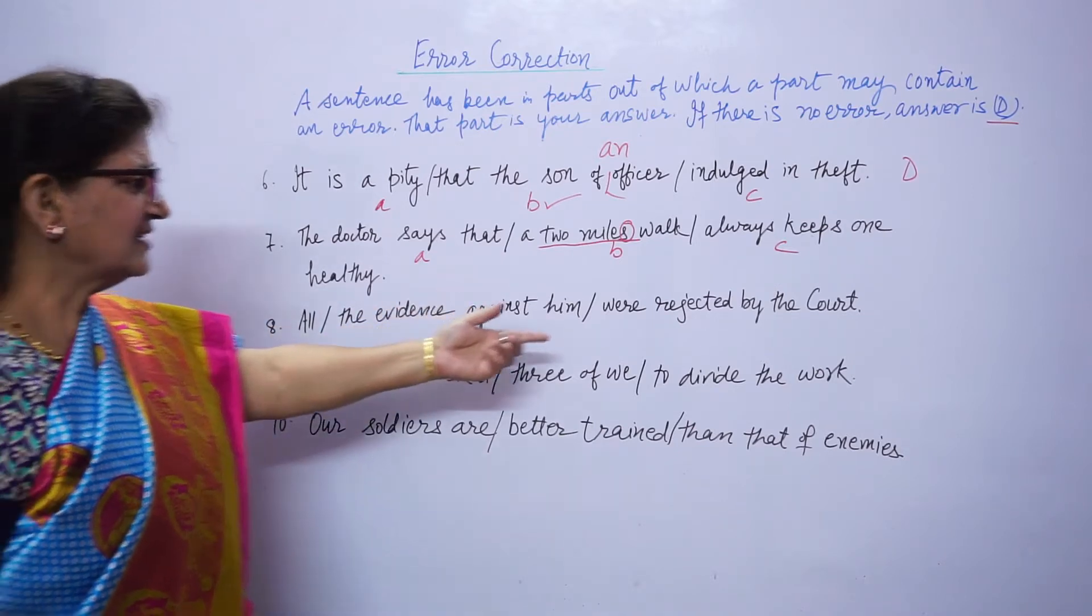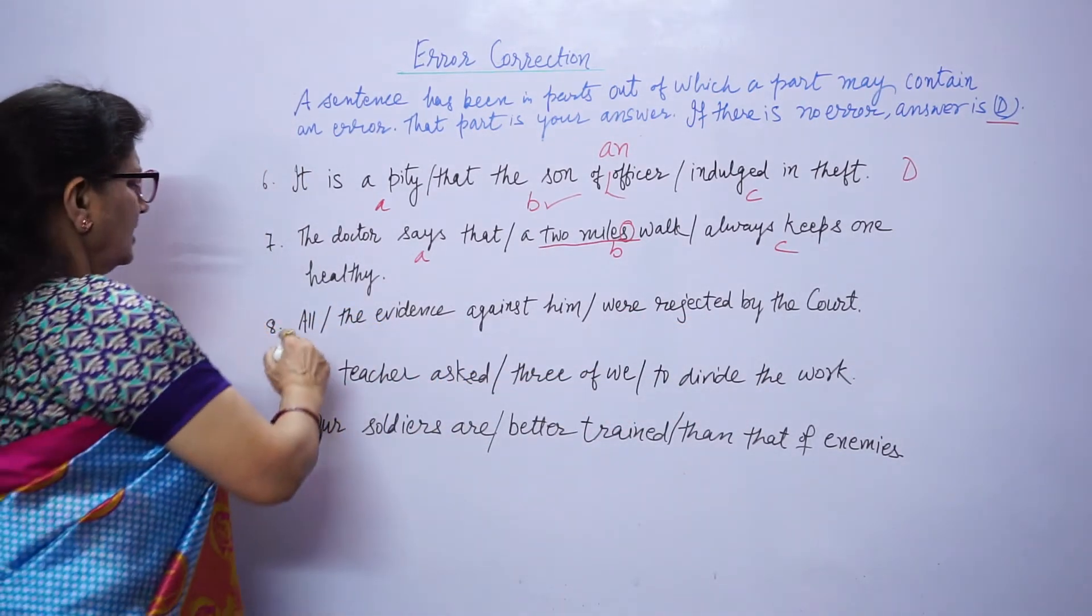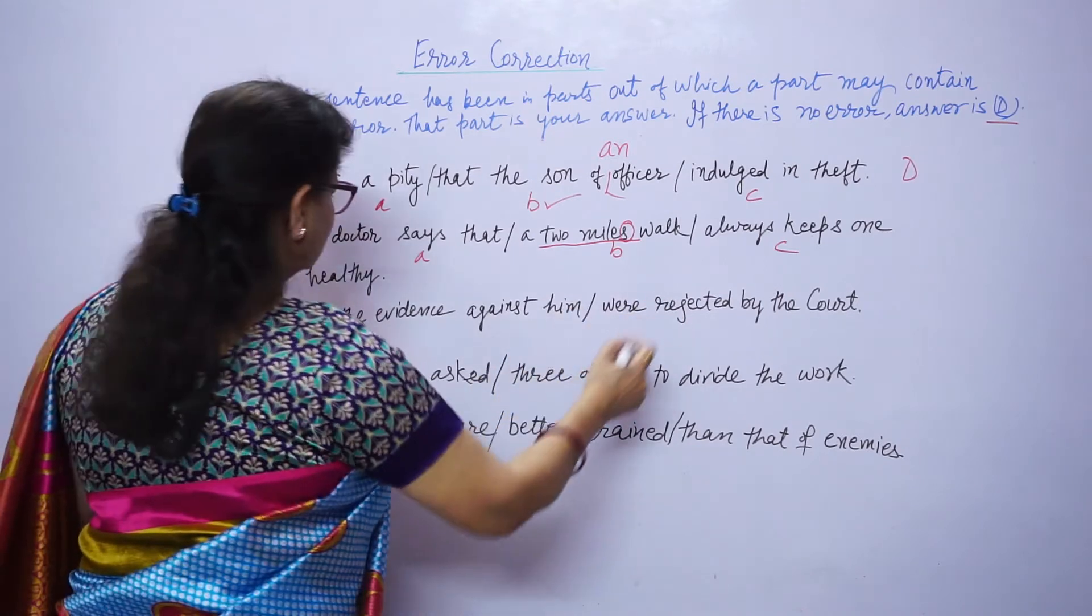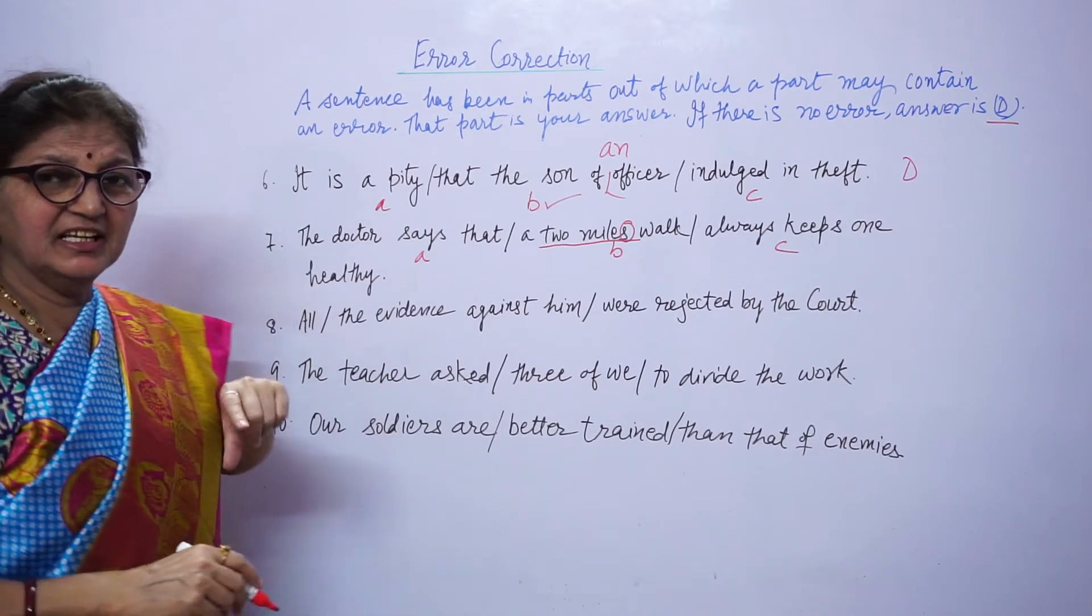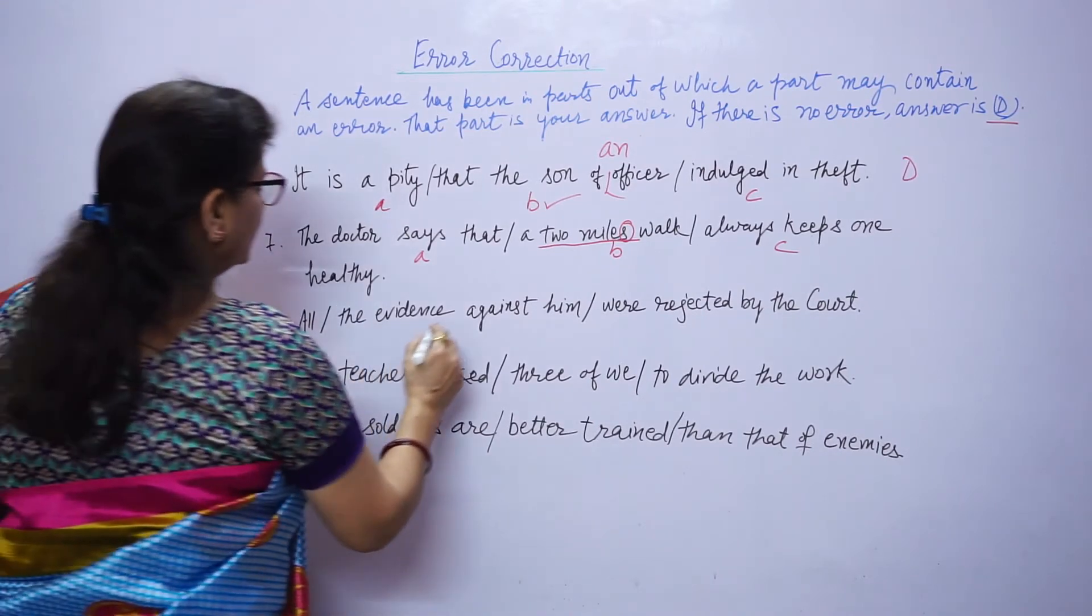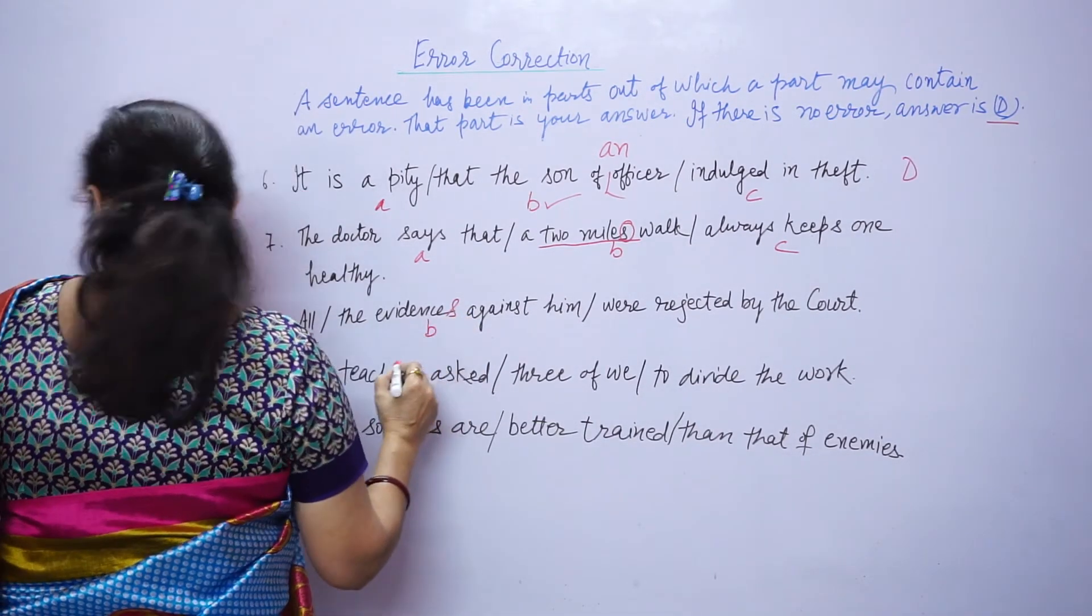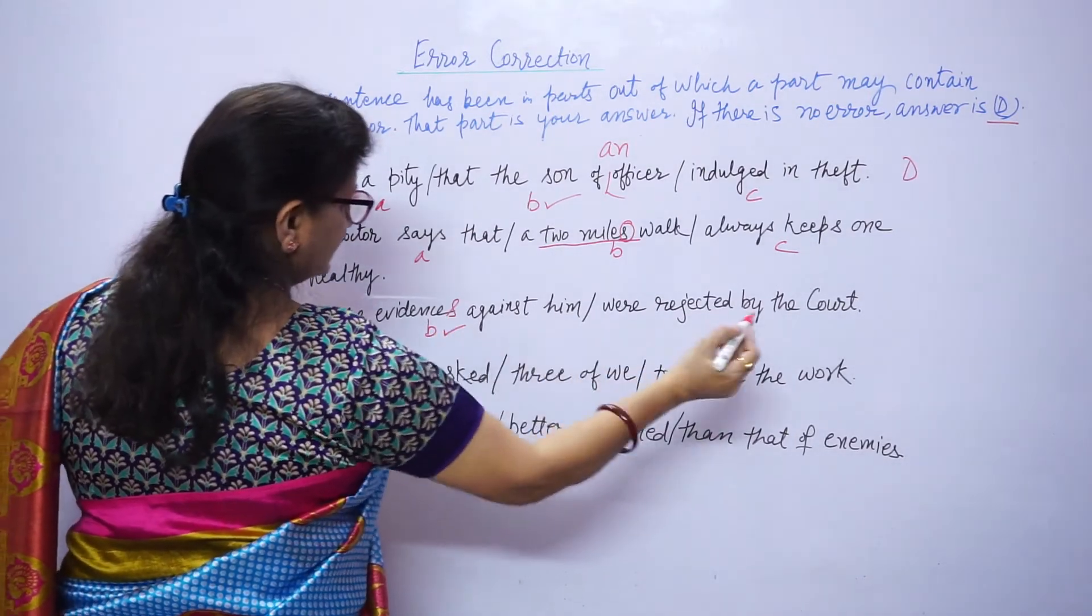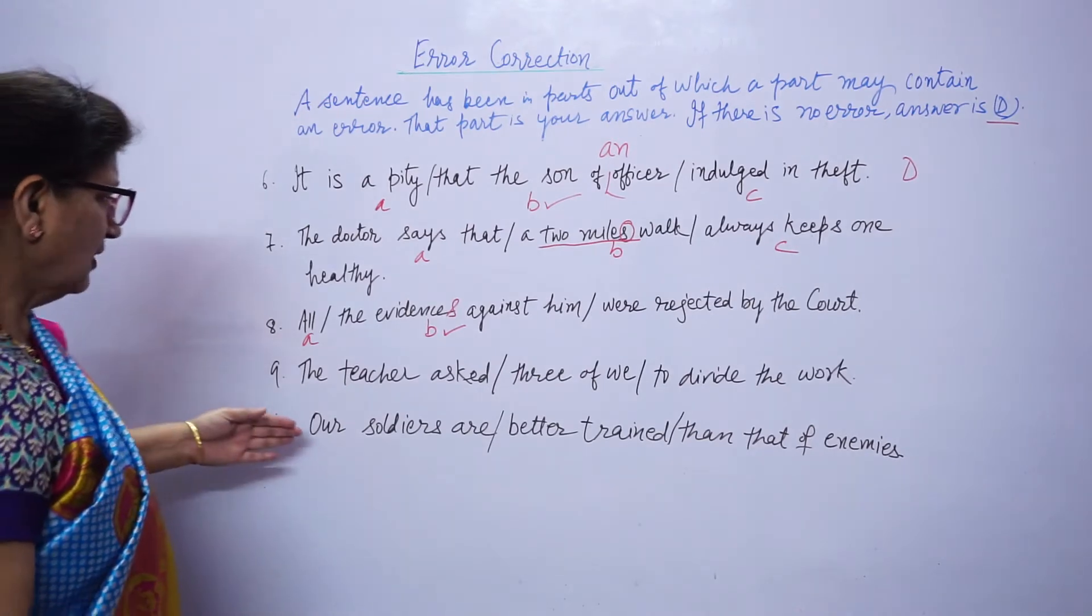All the evidence against him were rejected by the court. Were rejected, here determiner is all, which indicates plural number, so here not evidence, evidences. Error is in B part, so your answer is B.